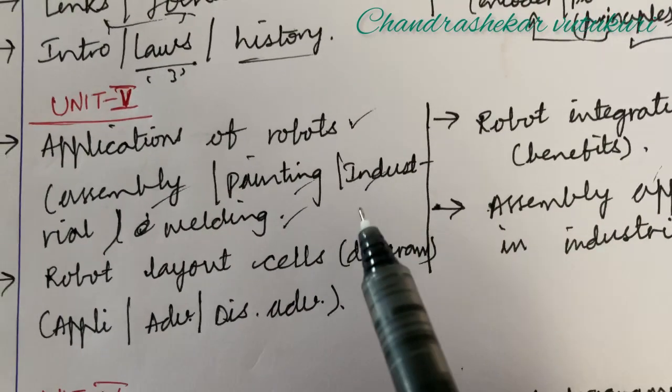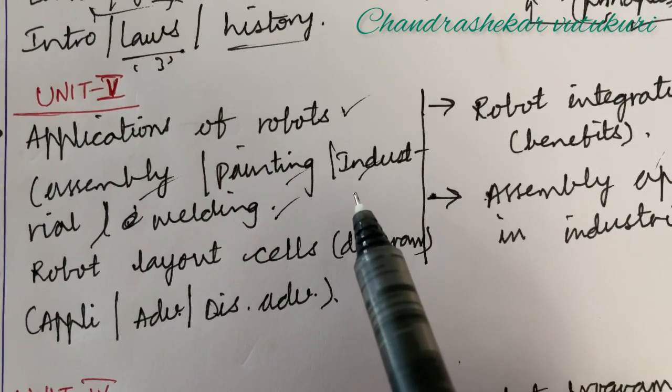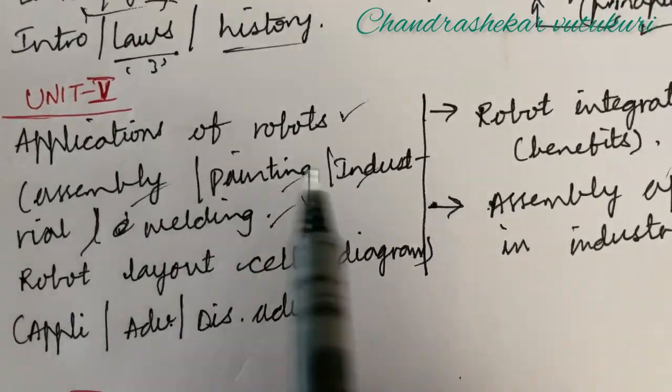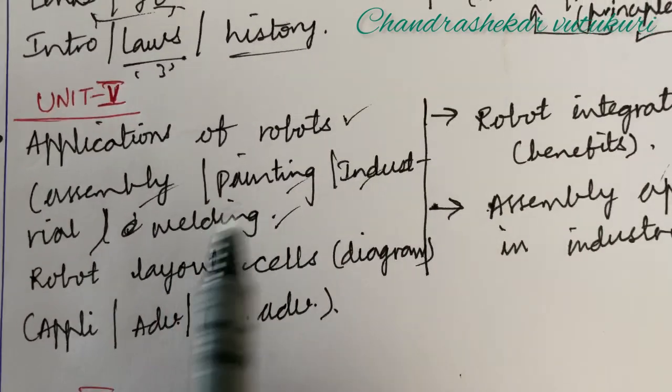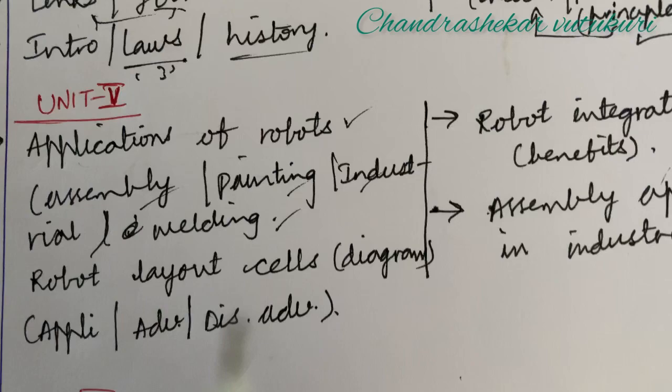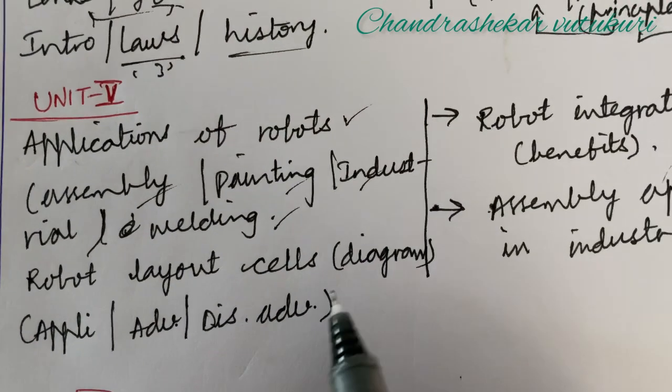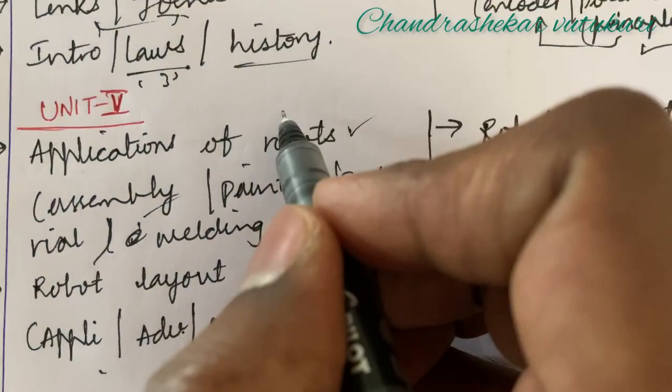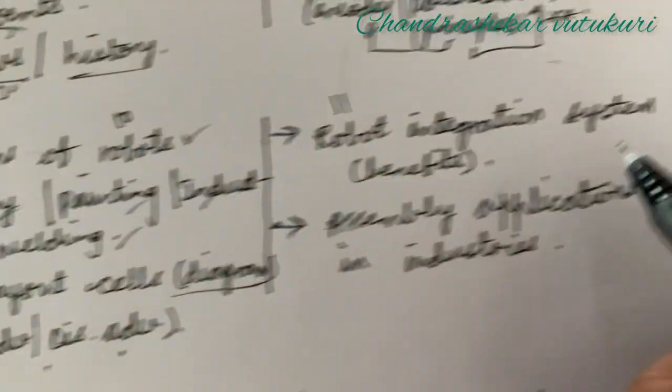The applications of robots in different applications such as in assembly line as well as painting and industrial applications and related to welding also. That is completely theory. Please do write very neatly in points so that you will be getting very good marks, and if possible try to work out the drawings also related to these applications.